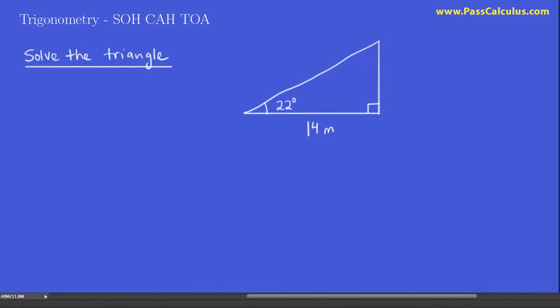Let's practice what we learned with SOH CAH TOA with this question. Here we have to solve this triangle. What does it mean to solve a triangle? It means to find all the angles and all the sides. So since there are three angles and three sides to any triangle, that really means we have to find six things.